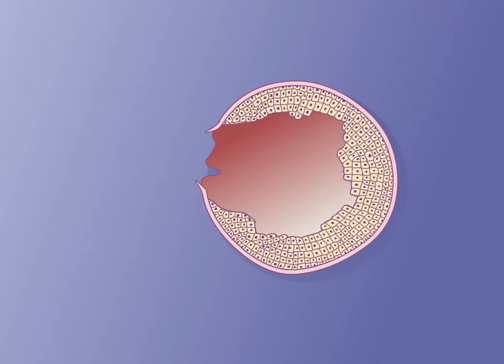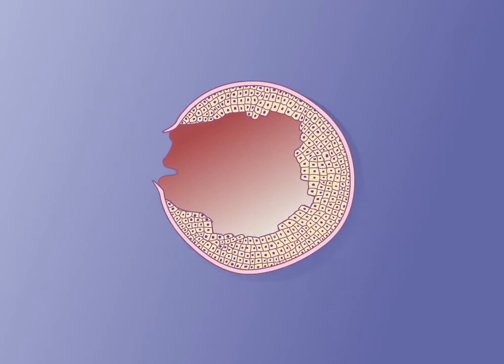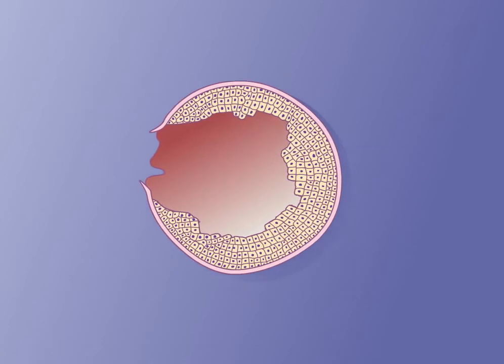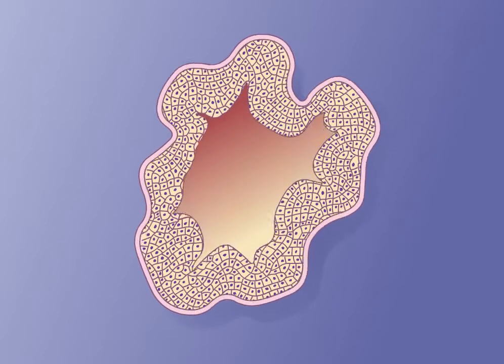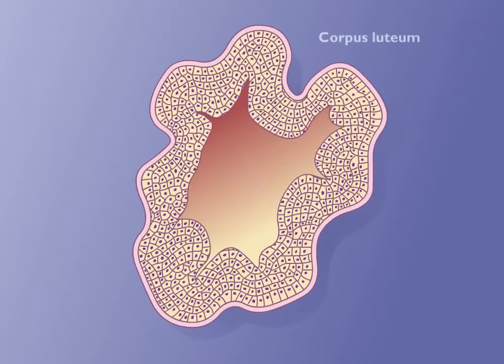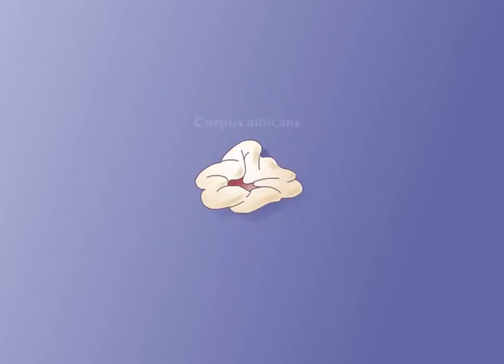Following ovulation, the granulosa cells divide rapidly and enlarge to form the yellow corpus luteum. When the corpus luteum degenerates, it forms the white corpus albicans.